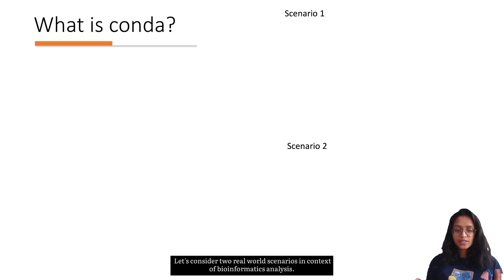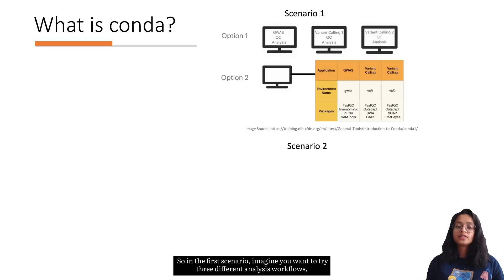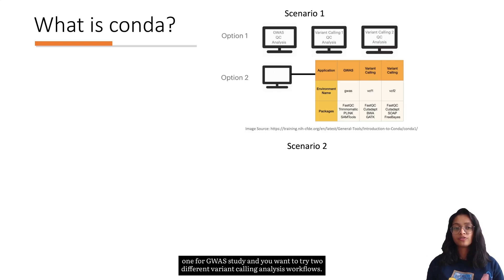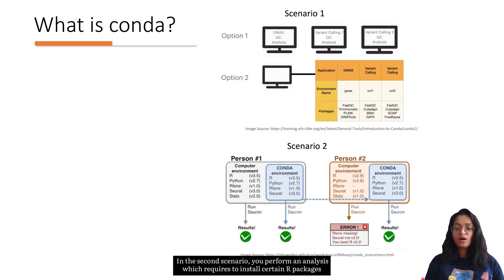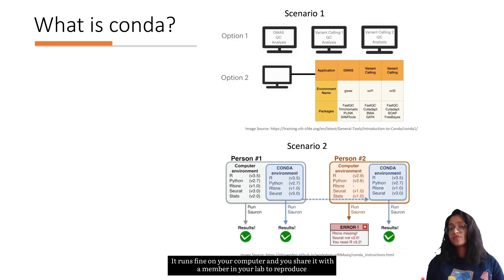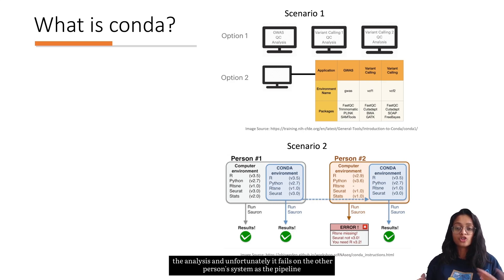Let's consider two real-world scenarios in the context of bioinformatics analysis. In the first scenario, imagine you want to try three different analysis workflows — one for a GWAS study and two different variant-calling workflows. Unfortunately these workflows require similar software but different versions. In the second scenario, you perform an analysis which requires certain R packages to run a workflow. It runs fine on your computer, but when you share it with a lab member it fails on their system.